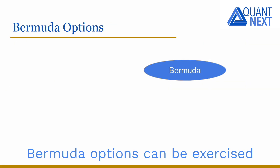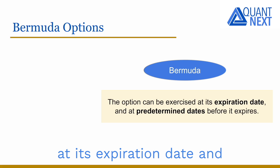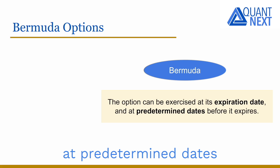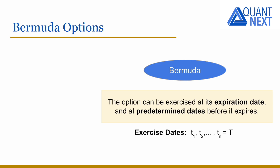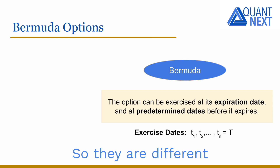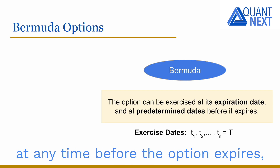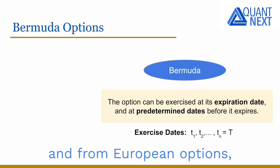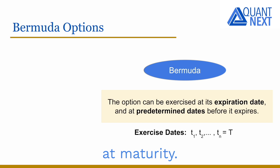Bermuda options can be exercised at the expiration date and at predetermined dates before it expires. So they differ from American options, which can be exercised at any time before the option expires, and from European options, which can only be exercised at maturity.